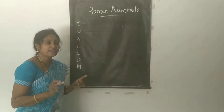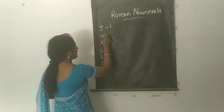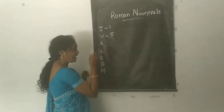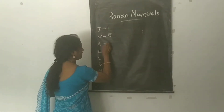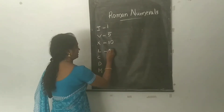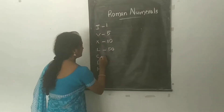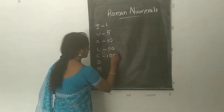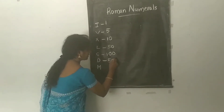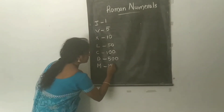I stands for 1, V stands for 5, X stands for 10, L stands for 50, C stands for 100, D stands for 500, and M stands for 1000.